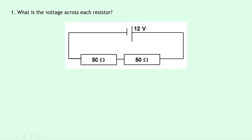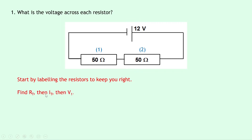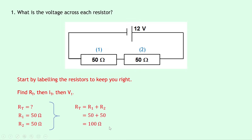Question one asks: what is the voltage across each resistor? We've got a 12 volt battery and two 50 ohm resistors in series. The first thing we want to do is label the resistors — call the left one R1 and the right one R2. We find RT first: RT equals R1 plus R2 equals 50 plus 50, which equals 100 ohms.